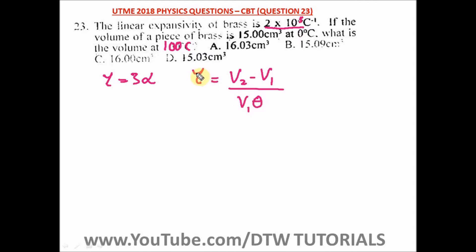From here we know that since we are not given the volume expansivity but we're given linear expansivity, this would be 3α. So we have 3 × 2 × 10⁻⁵ equals...